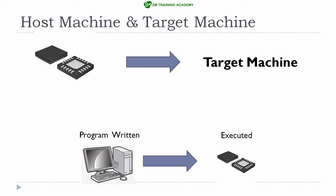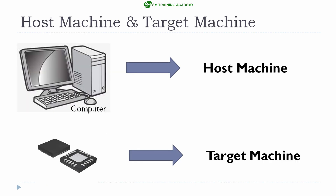So the program developed in the host machine — the computer — is executed in the microcontroller, the target device. In this example, the computer or host machine acts as a cross-compiler because it creates a program that needs to be executed on another machine, that is the target device — the microcontroller. I hope you understood what a host machine and a target device are. See you in the next video, thanks for watching.